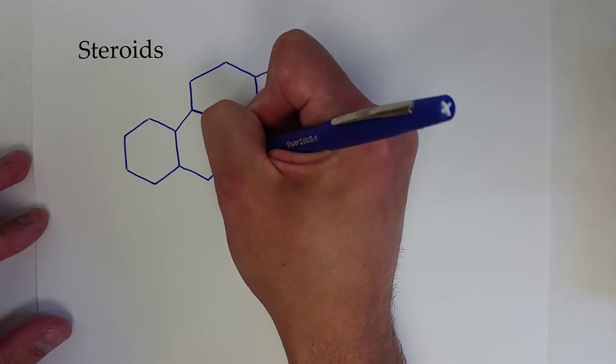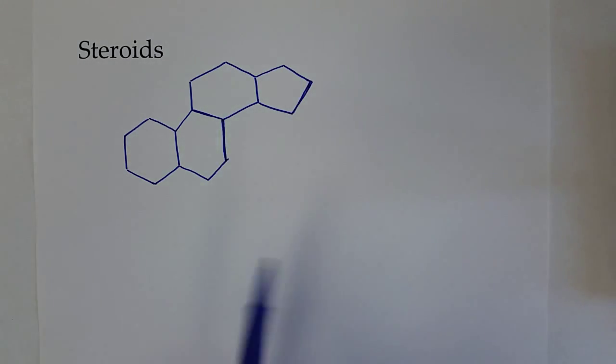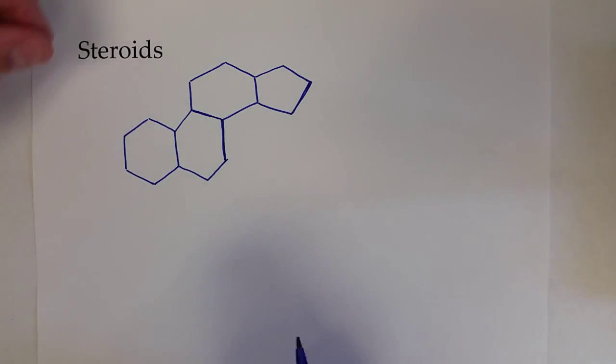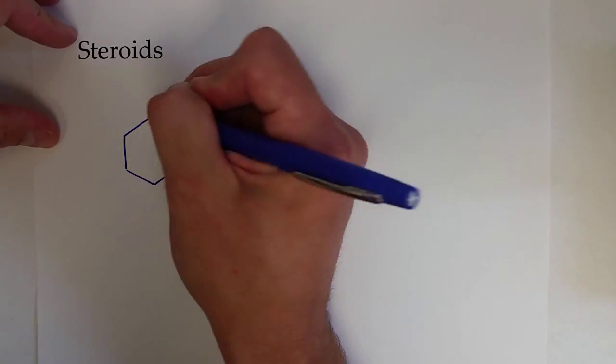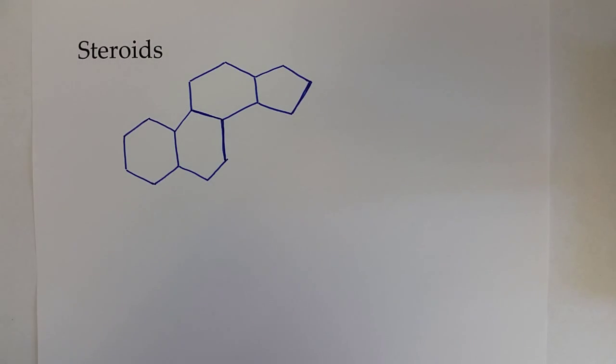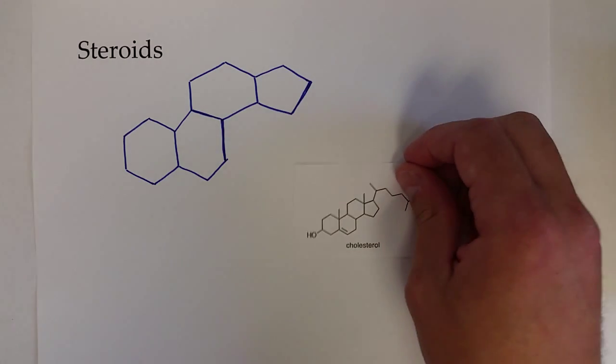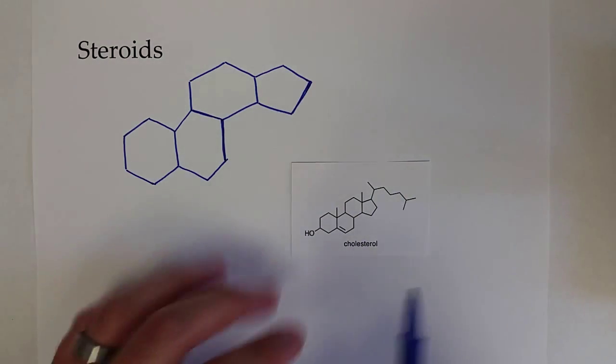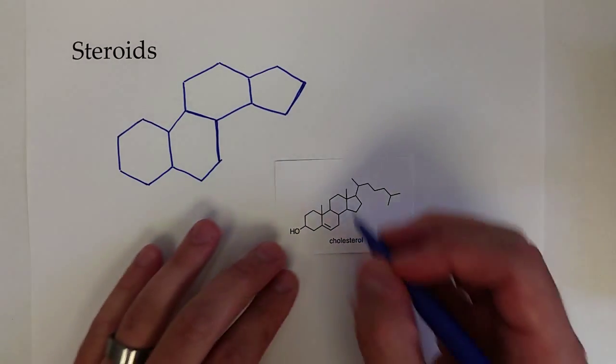On that fundamental structure, we can add things to any of those carbons and make different molecules. Probably the most famous steroid is cholesterol. Here we can see the four rings.